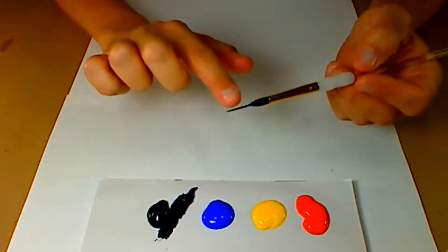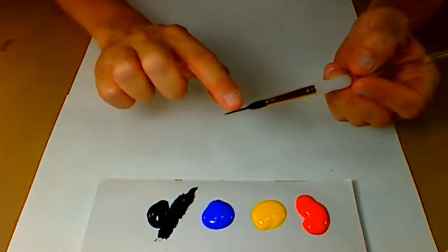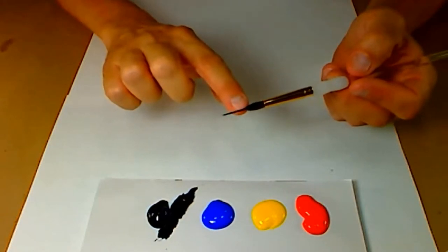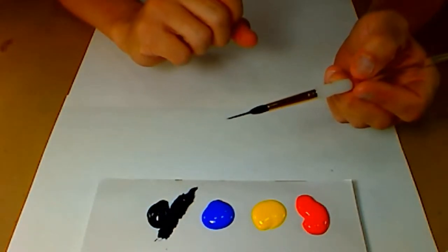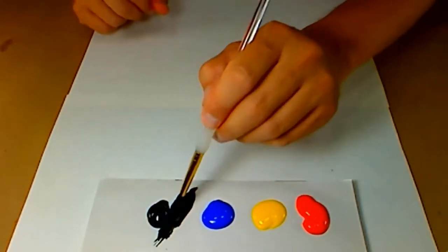You'll notice the long skinny tail that's on here. This is how you get such nice fine lines. This thicker area up here is a reservoir that's going to hold a lot of color in the belly of the brush.